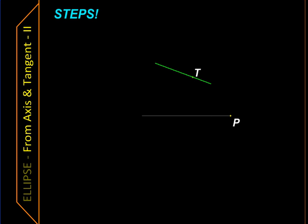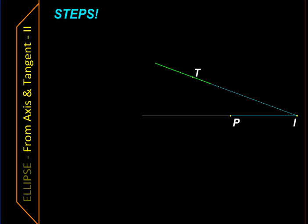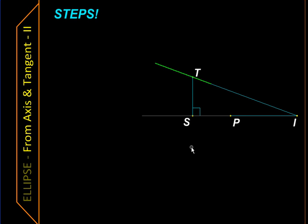The steps: First, we extend both the tangent and the given line of axis till they meet at their point of intersection I. Then we draw a perpendicular from the point of tangency onto the axis. S is the foot of that perpendicular.